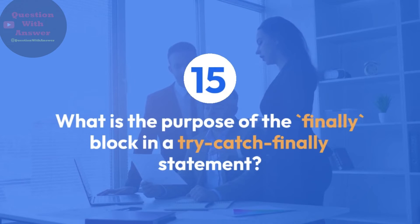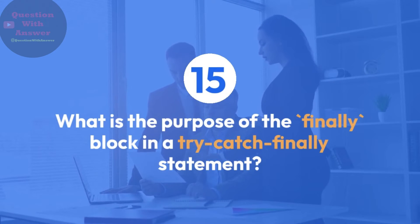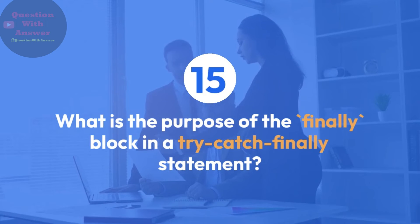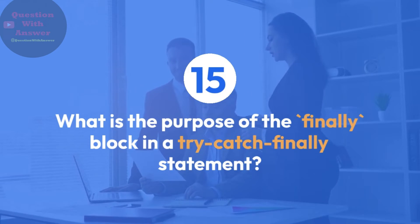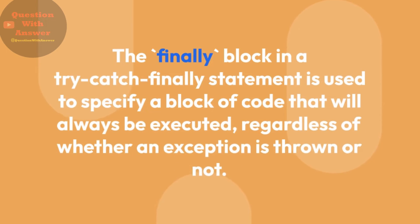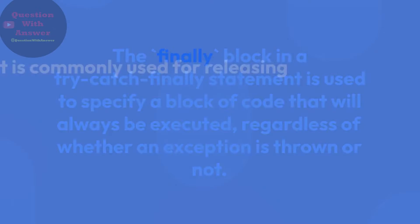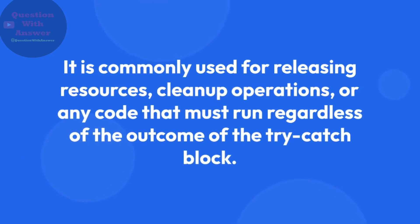Question 15: What is the purpose of the finally block in a try-catch-finally statement? Answer: The finally block is used to specify a block of code that will always be executed, regardless of whether an exception is thrown or not. It is commonly used for releasing resources, cleanup operations, or any code that must run regardless of the outcome of the try-catch block.